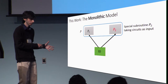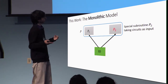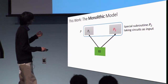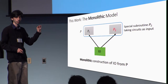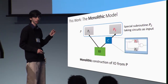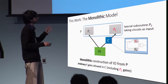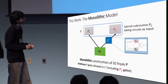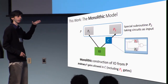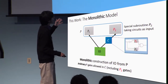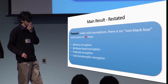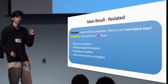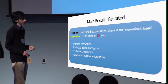Inspired by the previous model for circuits with one-way function gates, we extend this framework and propose our own model called the monolithic model. We say we have a monolithic construction of I.O. from some primitive P if P can accept circuits with any arbitrary P-gates — including encryption or decryption gates of P — and is not constrained to only a specific gate type such as a one-way function gate. This captures the FE to I.O. construction and bootstrapping theorems. So to accurately restate our result: there is no monolithic construction of I.O. from any of these primitives.